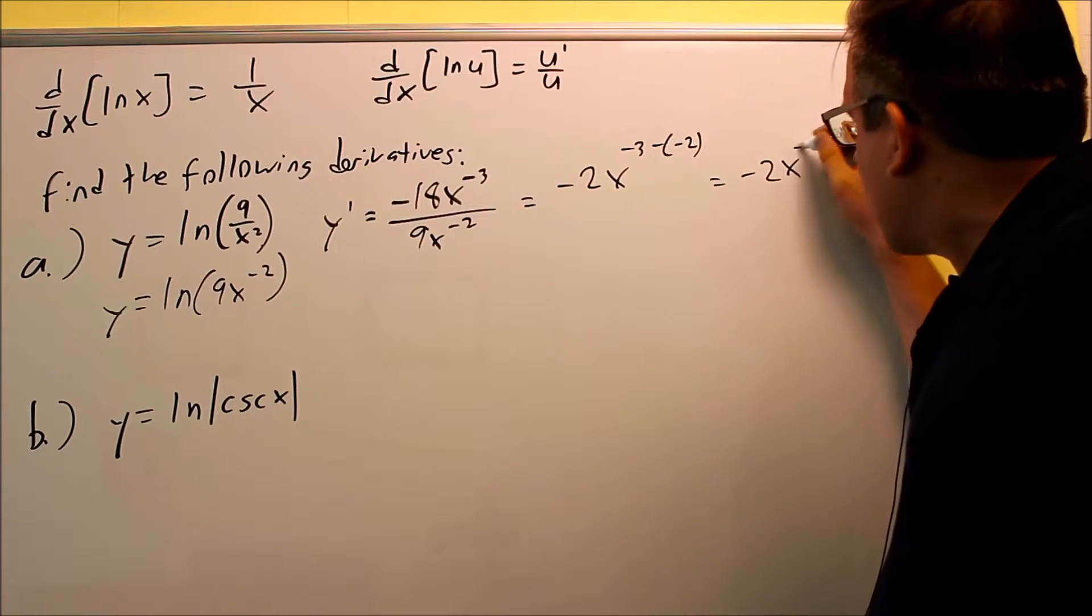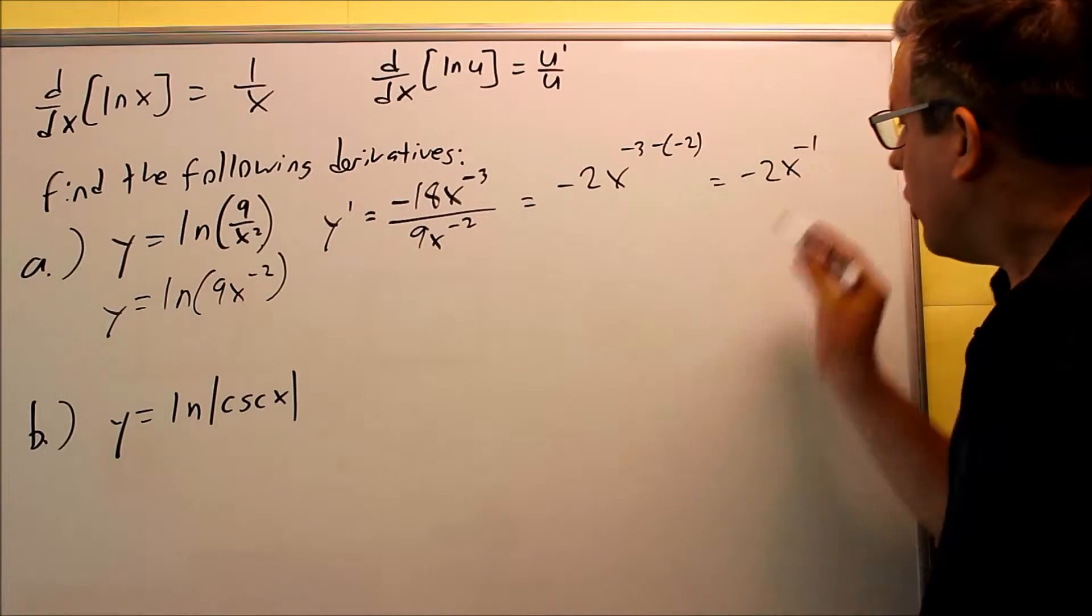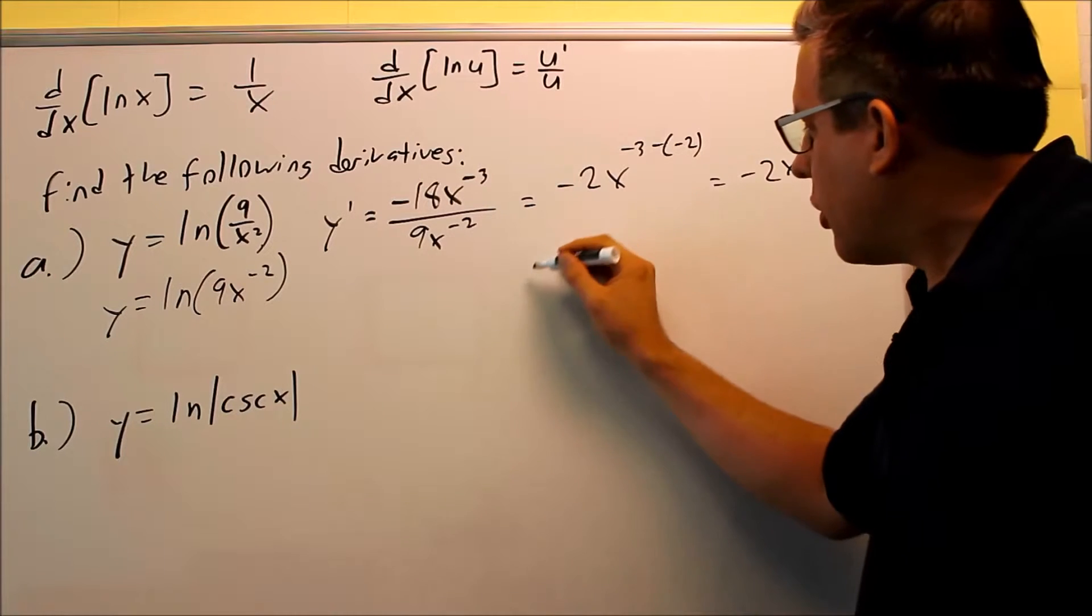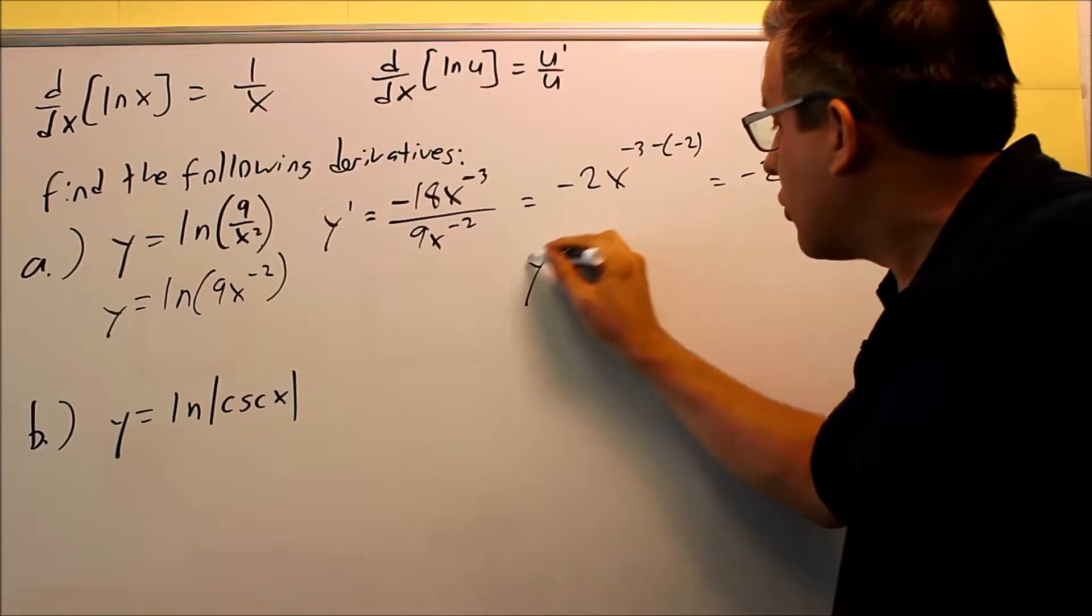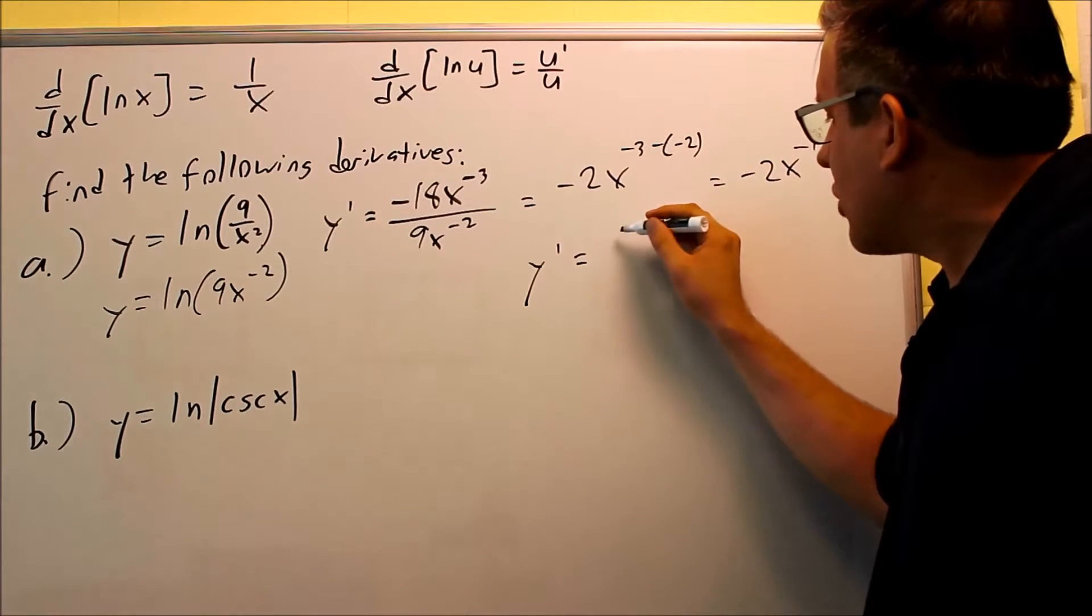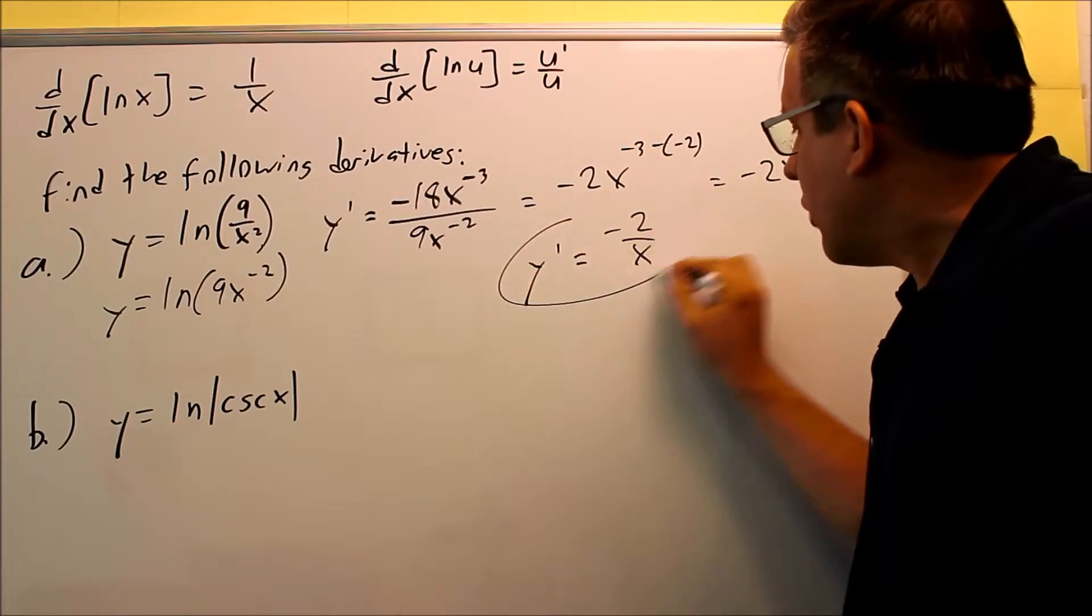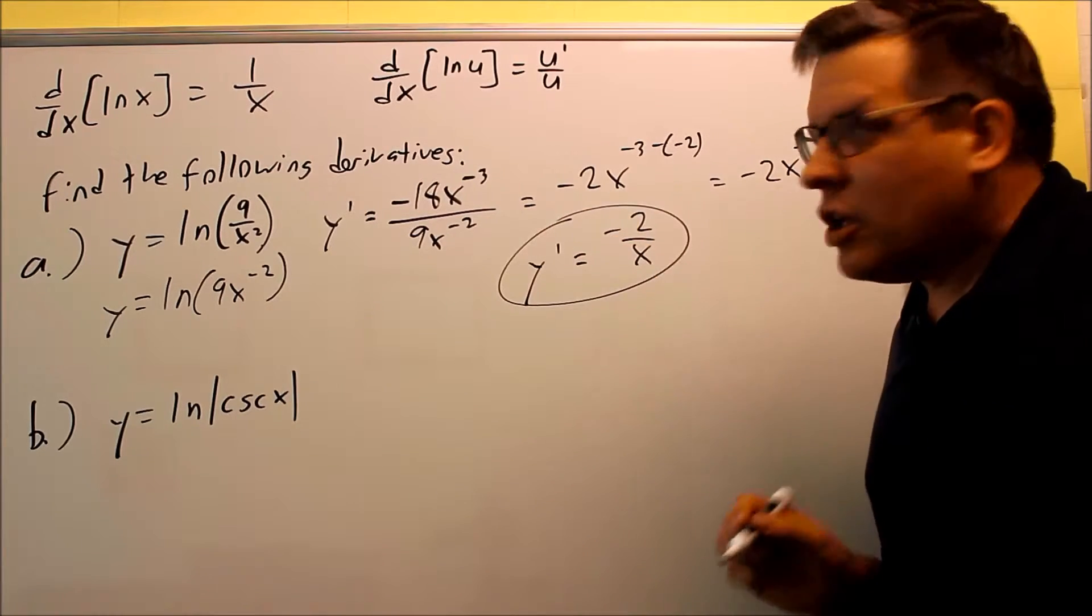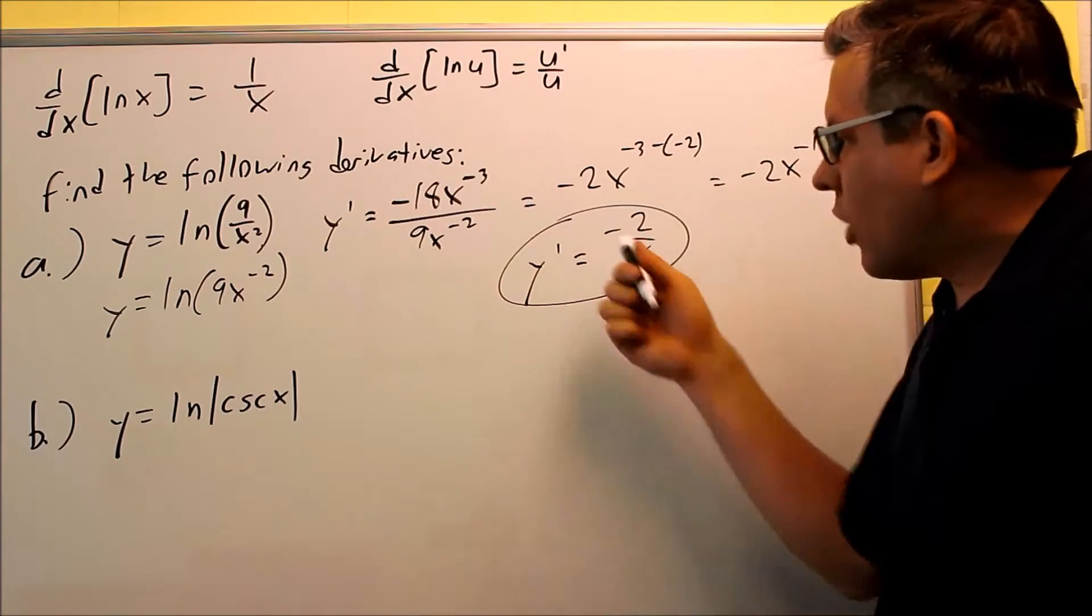So you get negative 2x to the negative 1 when you subtract those, but we want to write it out as a fraction. So here's your final answer, y prime is going to be negative 2 over x. So that would be the final answer that you would have for this one, that would be y prime.